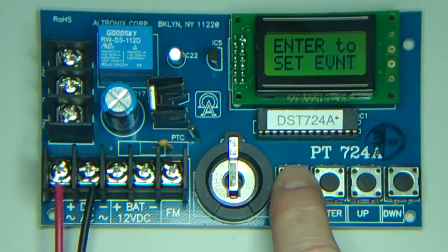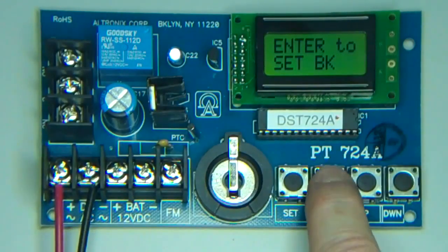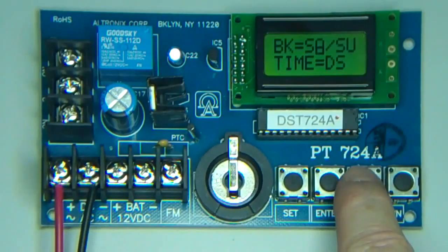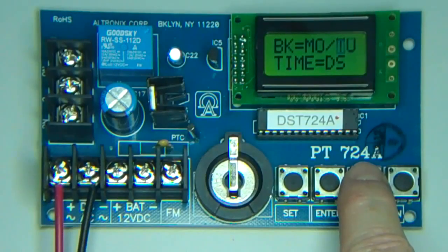Next, we're going to set the block event. Scroll through the menu using the set button until you see BK. This block is set up for Sunday through Sunday, and we're going to change it to Monday through Friday.